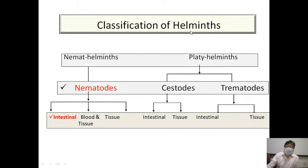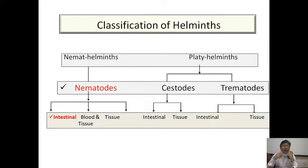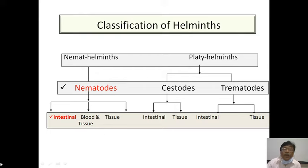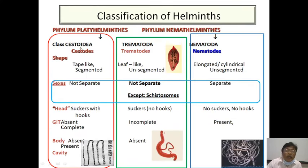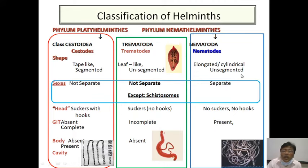Looking into helminths, they can be broadly classified into Nemathelminths and Platyhelminthes. Nemathelminths are long cylindrical worms, whereas Platyhelminthes are flat and include intestinal and tissue infections. We have Cestodes — where Taenia saginata, Taenia solium, and others come — which are tape-like segmented structures. Trematodes are leaf-like unsegmented, and Nematodes are elongated, cylindrical, and unsegmented.